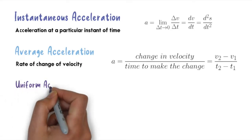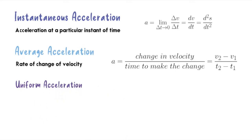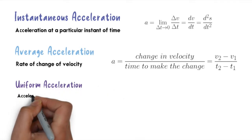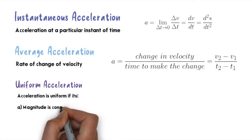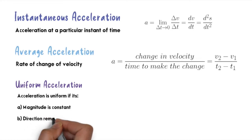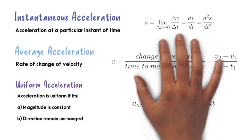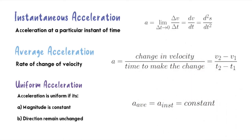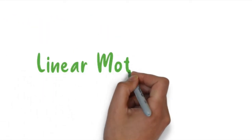The last one is uniform acceleration. Uniform acceleration is a condition when the acceleration has constant magnitude and the direction remains unchanged. At uniform acceleration, average and instantaneous acceleration will have a constant value. Now we move to linear motion graphs.